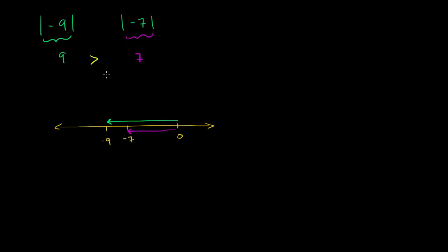If you ever get confused with the greater than or less than symbols, remember that the symbol is larger on the left-hand side — that's the greater than side. It's also true that without absolute value signs, negative 9 is less than negative 7. Notice the smaller side of the symbol is on the smaller number. So negative 9 is less than negative 7, but since negative 9 is further to the left of 0, the absolute value of negative 9, which is 9, is greater than the absolute value of negative 7.